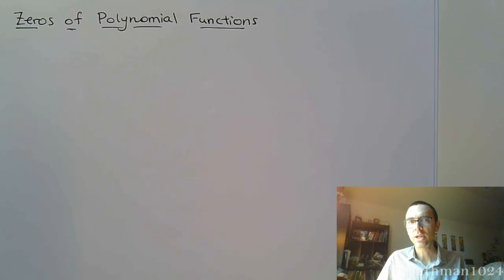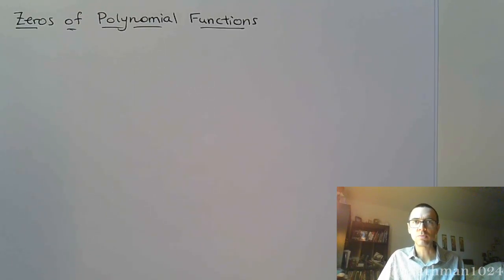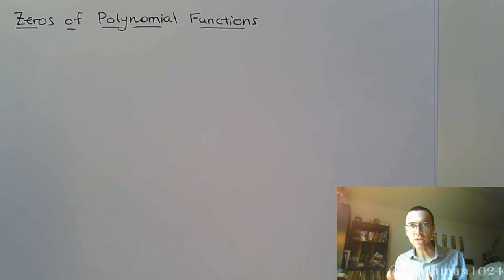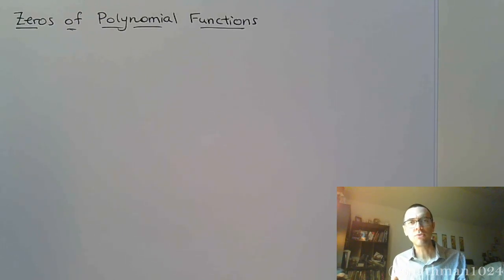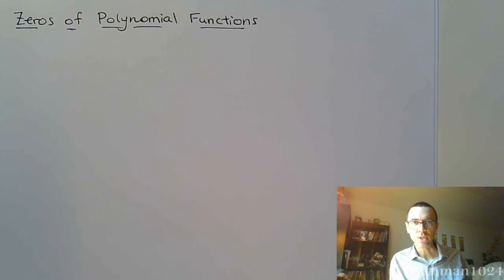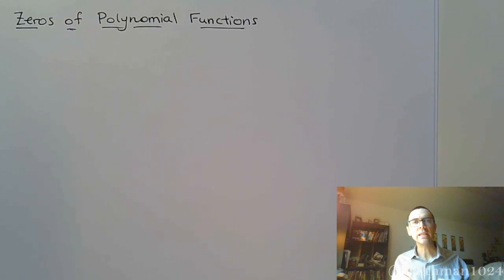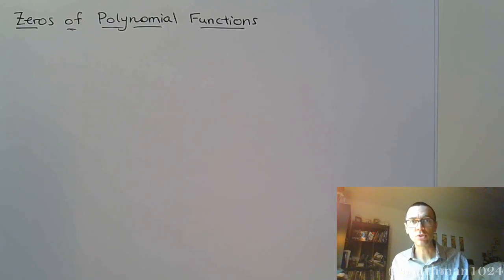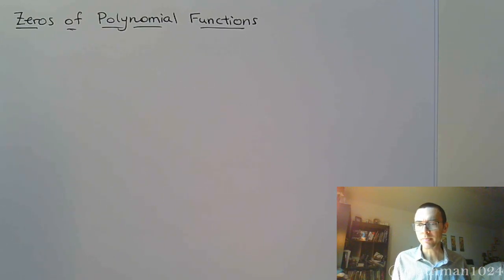In this video, we're going to be discussing zeros of polynomial functions. When we say a zero, we're talking about where the function equals zero. So that means we're going to be looking for any input, any x value that's going to lead to zero for an output.